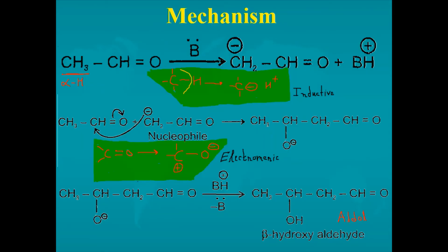Let's understand it by mechanism. First, the alpha hydrogen of an aldehyde undergoes inductive effect — we get a carbanion and H+ ion in the presence of base, forming BH+ and the carbanion CH2-CHO. Now in the second aldehyde, we see electromeric effect, where the pi bond shifts to oxygen and carbon becomes a carbocation. In the third step, these plus and minus combine, and the H from BH+ goes to oxygen, forming an OH group. The full addition product formed is called aldol — that is beta-hydroxy aldehyde — because it contains both an aldehyde group and an OH group.